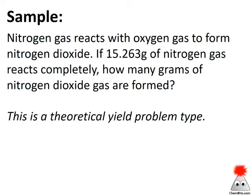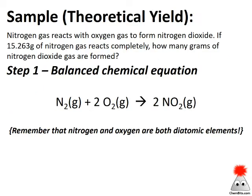Here's our first example: nitrogen gas reacts with oxygen gas to form nitrogen dioxide. If 15.263 grams of nitrogen gas reacts completely, how many grams of nitrogen dioxide gas are formed? This would be a theoretical yield problem type — if we react all of this reactant, how many grams of product can we form? It's a stoichiometry problem, so let's approach it like one. Step one: write the balanced chemical equation. Nitrogen gas reacts with oxygen gas to form NO₂. Balancing that equation, a couple of 2s pop up, and remember that nitrogen and oxygen are both diatomic elements.